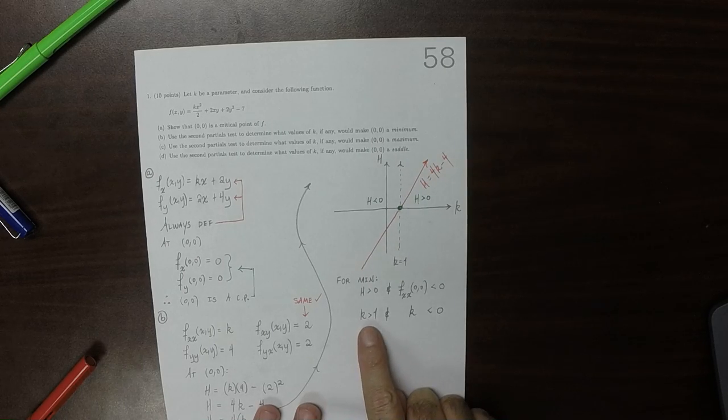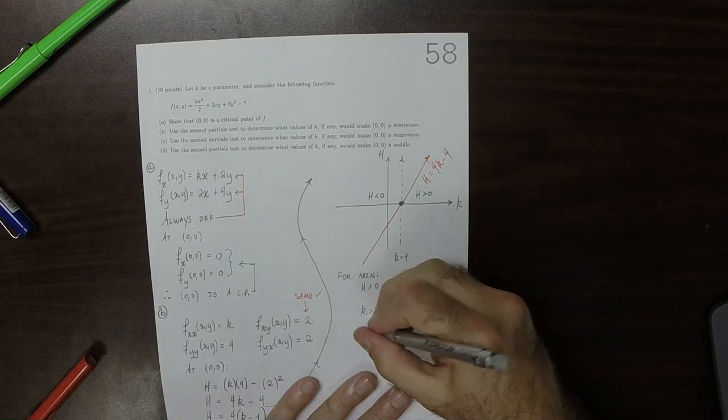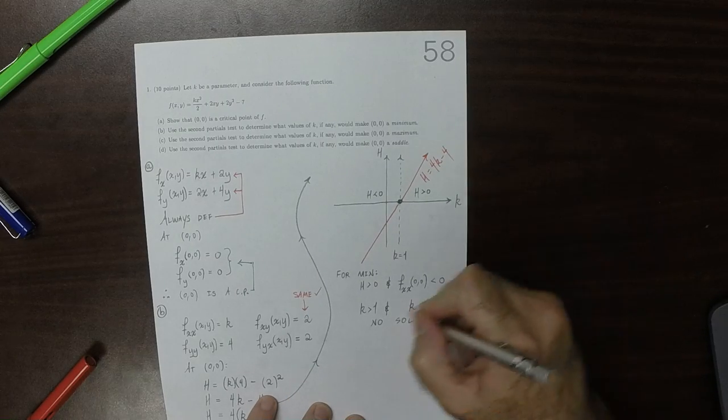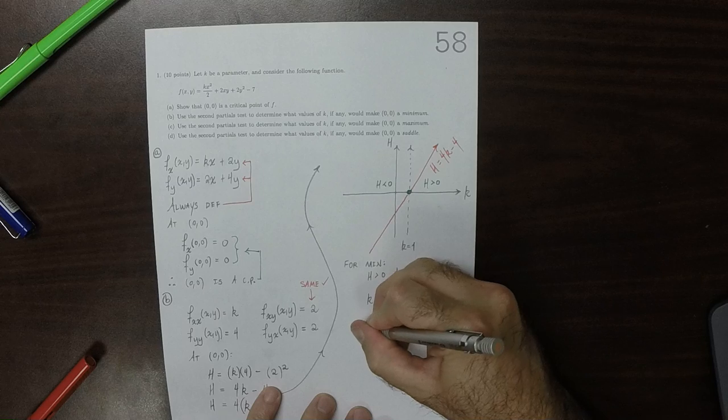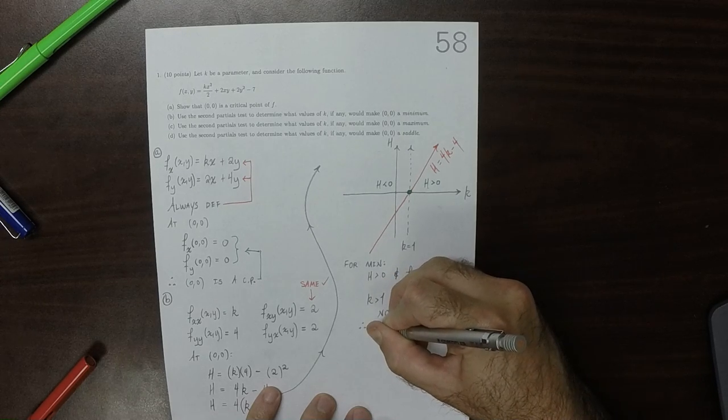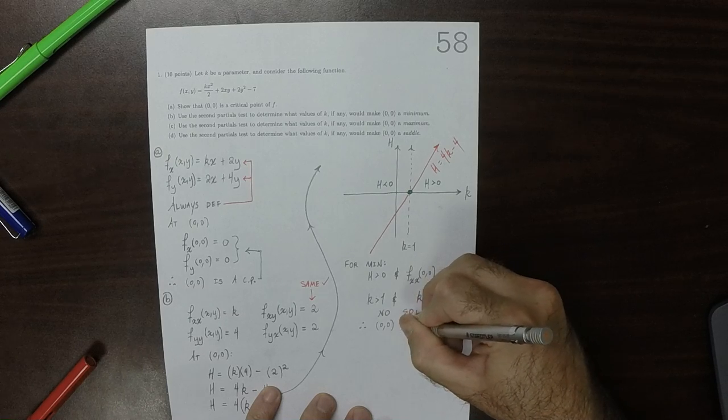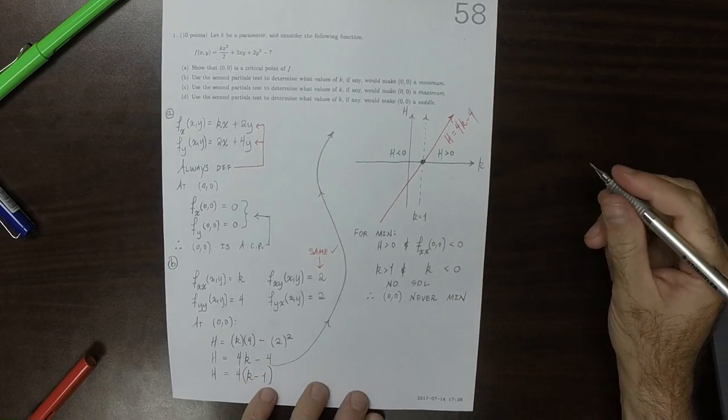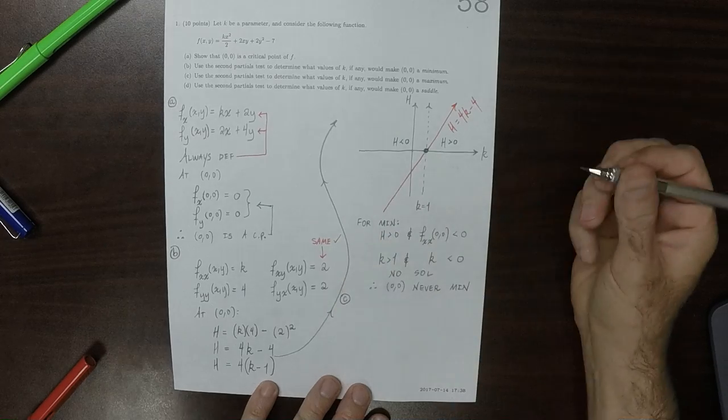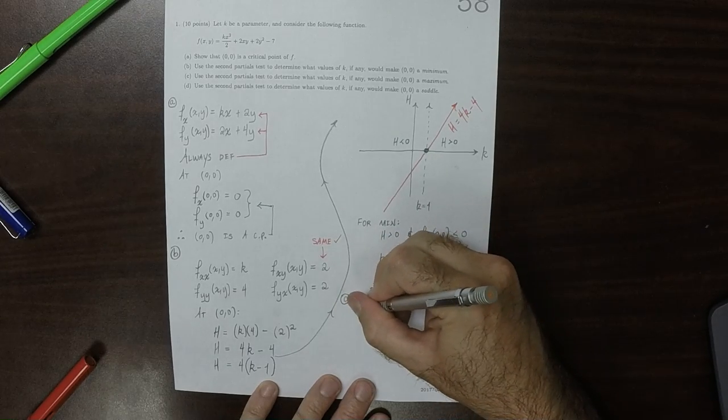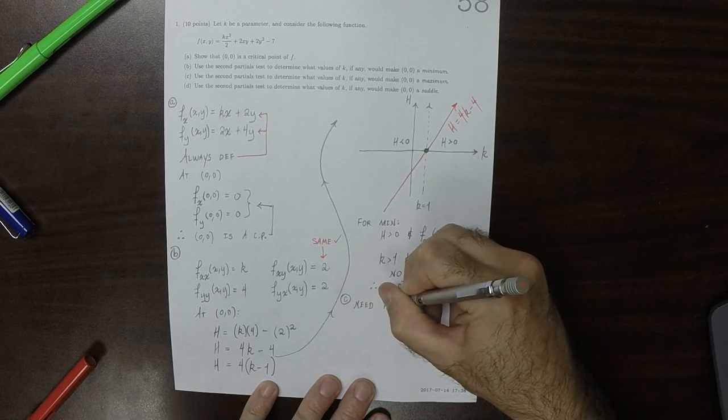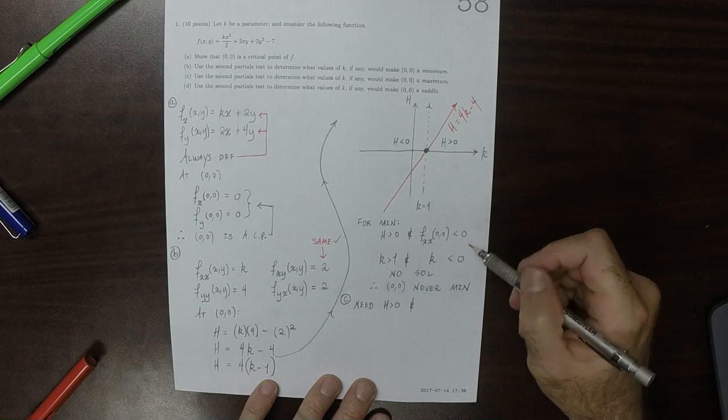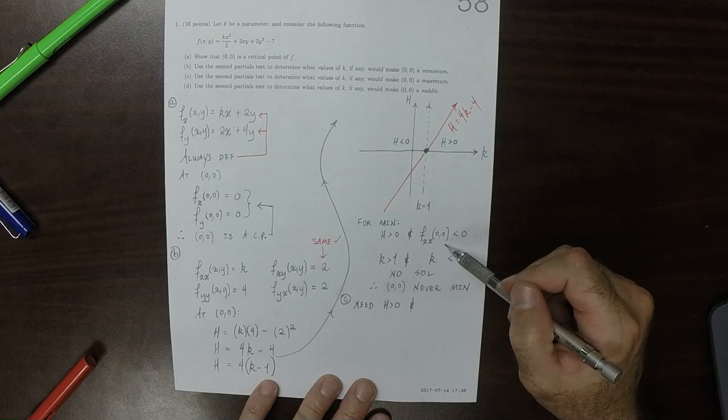So there's no solution to this. There's no k that is both more than 1 and less than 0. So there's no solution to those requirements, and therefore, 0, 0 is never a min. Okay, so then for part c, when is it a max? Again, we're going to need that h is positive. Ah, wait a second. To be a min, I have these backwards.